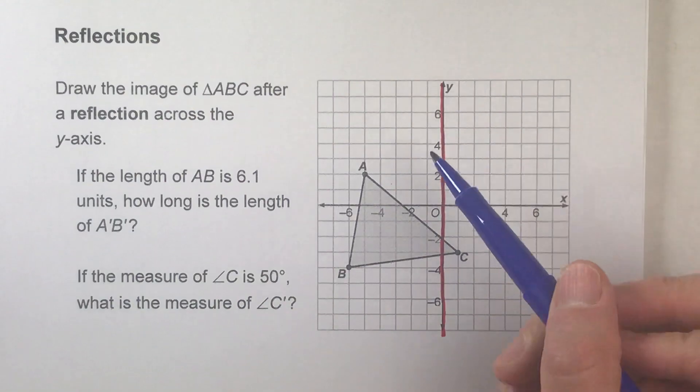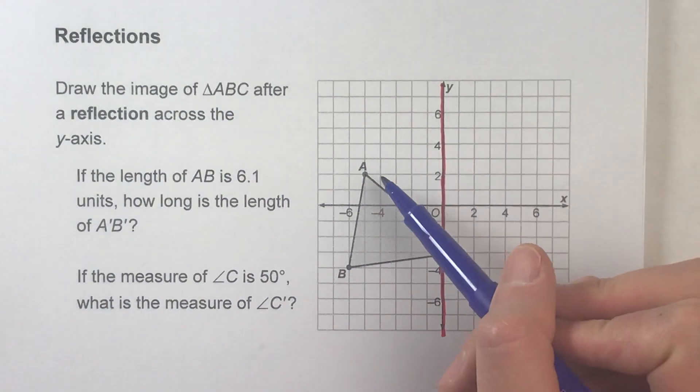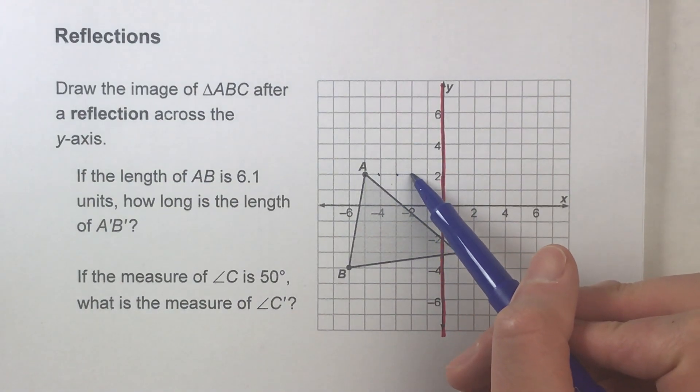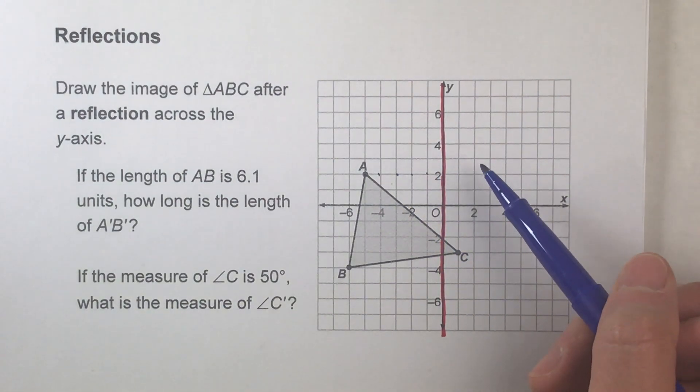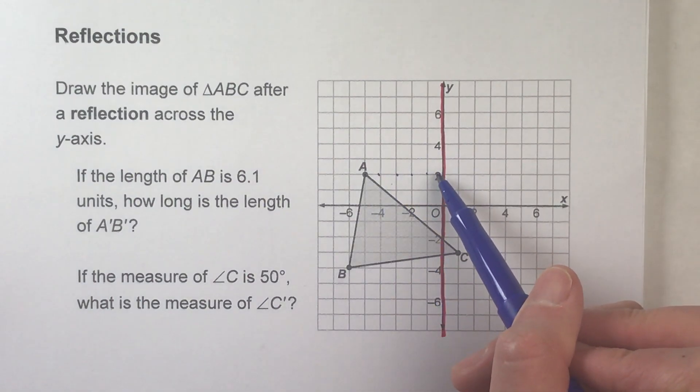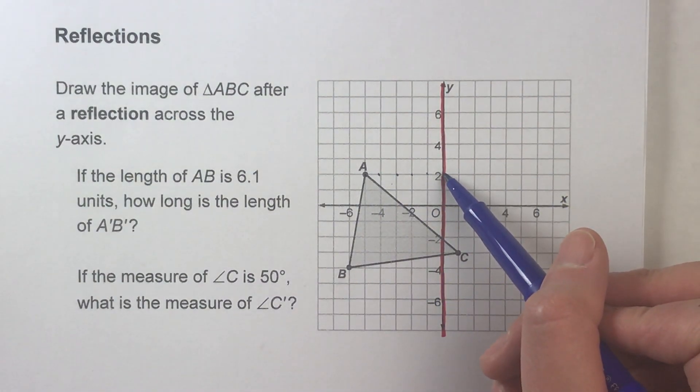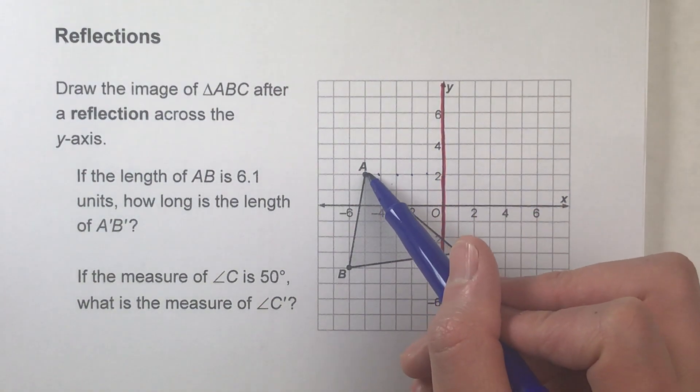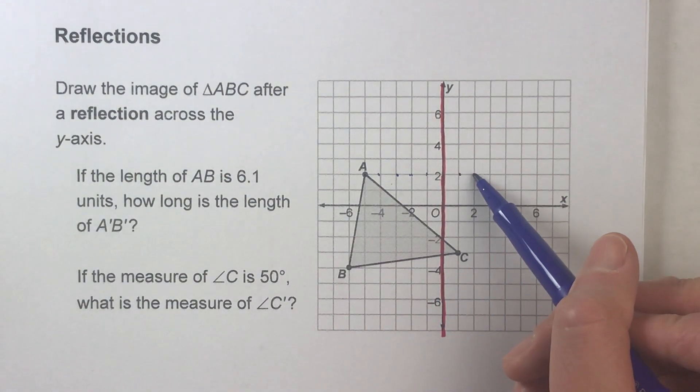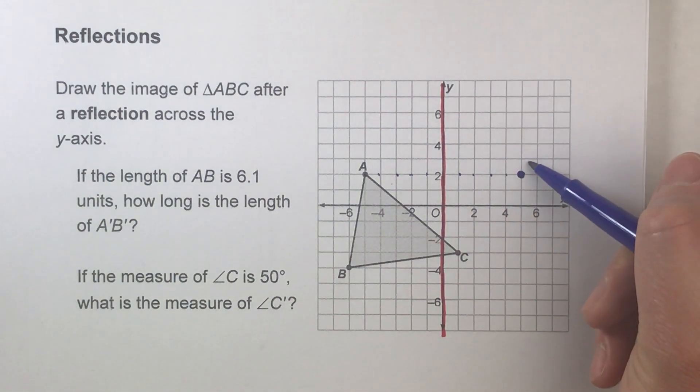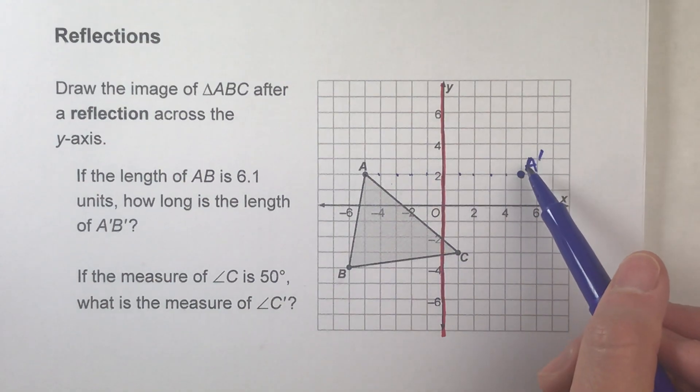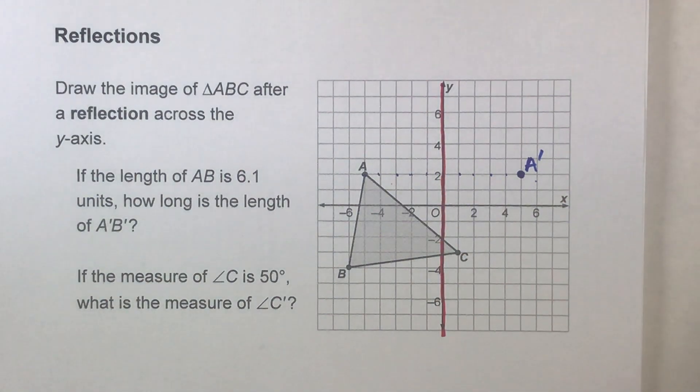Now if you're going to reflect a point across this line, for example point A, you need to see that point A is one, two, three, four, five steps away from the mirror. If we walk straight to the mirror, it's five steps away. That means its reflection is going to be five steps away from the mirror on the other side. So this point right here is one, two, three, four, five steps away on the left side. A prime is going to be one, two, three, four, five steps away on the other side. And A prime is the reflection of A, and we label it with the prime mark because we want to show that it's different than the original A point.